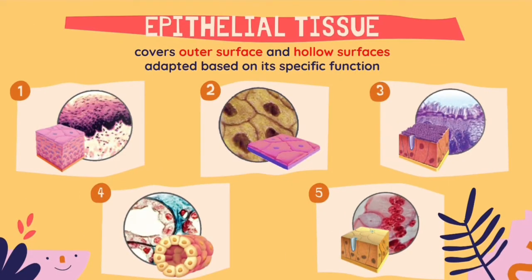First and foremost, we are going to learn about epithelial tissues. Epithelial tissues cover the outer surface of the human body such as the skin and the hollow surfaces of the human body like the digestive tract and respiratory tract. Here we have five different structures of the epithelial tissue that are all adapted to form their own specific functions.